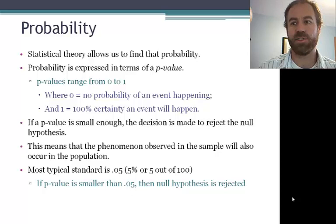If the p-value is less than .05, then we can reject the null hypothesis. Remember that the null hypothesis states that there is no difference between the groups. Therefore, if we reject it, we are saying that there is a difference. This tells us that the phenomenon observed in the sample will also occur or is very likely to occur in the population.